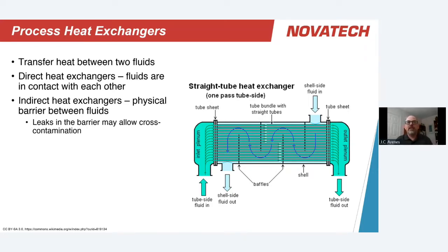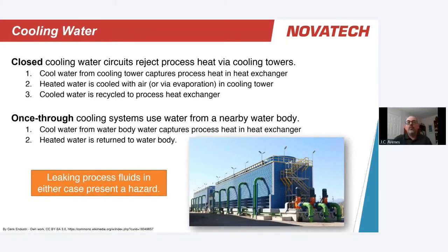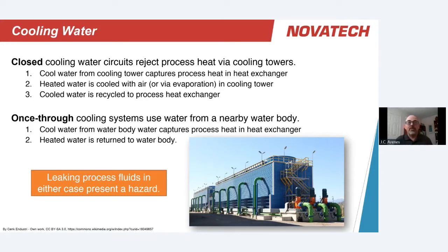In either case, leaks in the barriers will allow cross-contamination — either water into the process fluid or the process fluid into the cooling medium. Cooling water is one of the most commonly used cooling fluids. In a closed cooling water circuit, as seen with cooling towers, cold water is circulated to process heat exchangers, brings the heat back to the cooling towers where it is cooled by air, and is then circulated back out again. It's a closed loop with no water loss other than through evaporation.